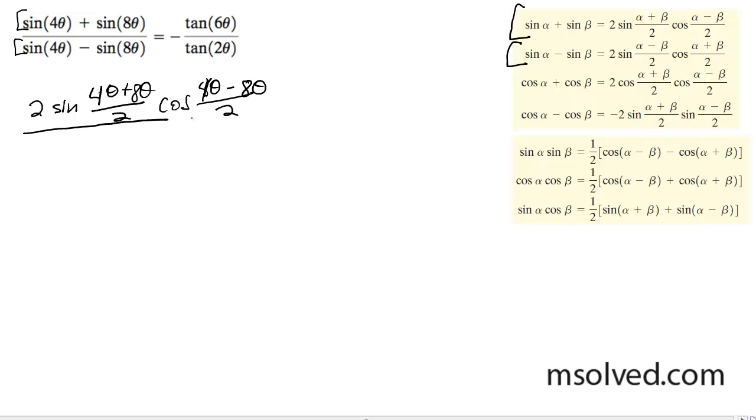So the denominator here, we're going to get 2 sine 4 theta minus 8 theta divided by 2, and then cosine 4 theta plus 8 theta divided by 2.